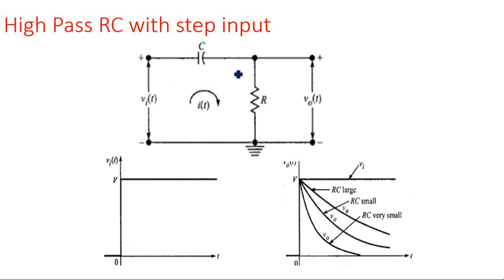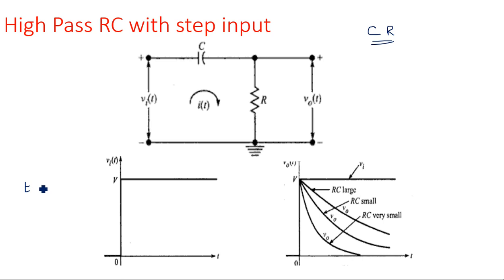Here a step input is applied for the high pass RC circuit — remember this is C followed by R. First C is there, then R; input is applied here and output is here. All parameters — input, output, and current — are varying with respect to time. The input voltage conditions are: for T less than 0, voltage Vi equals 0; for T greater than or equal to 0, Vi equals V.